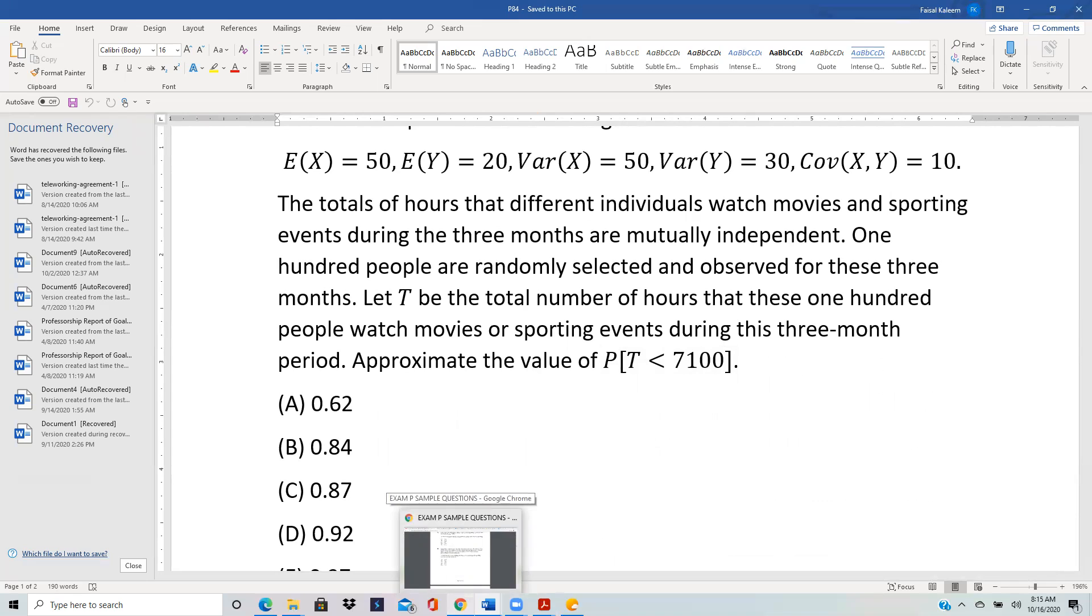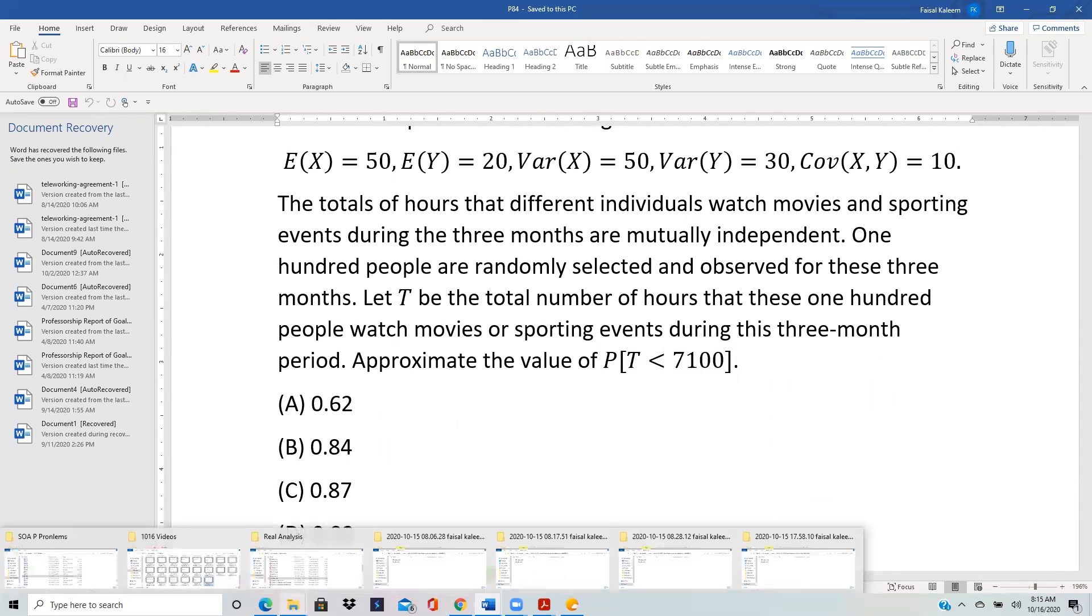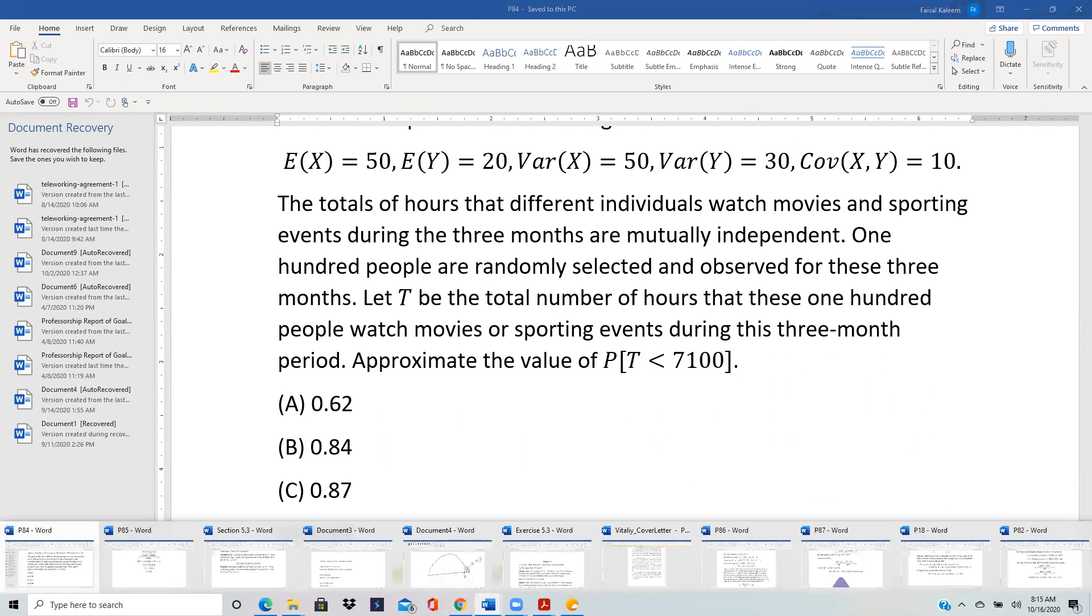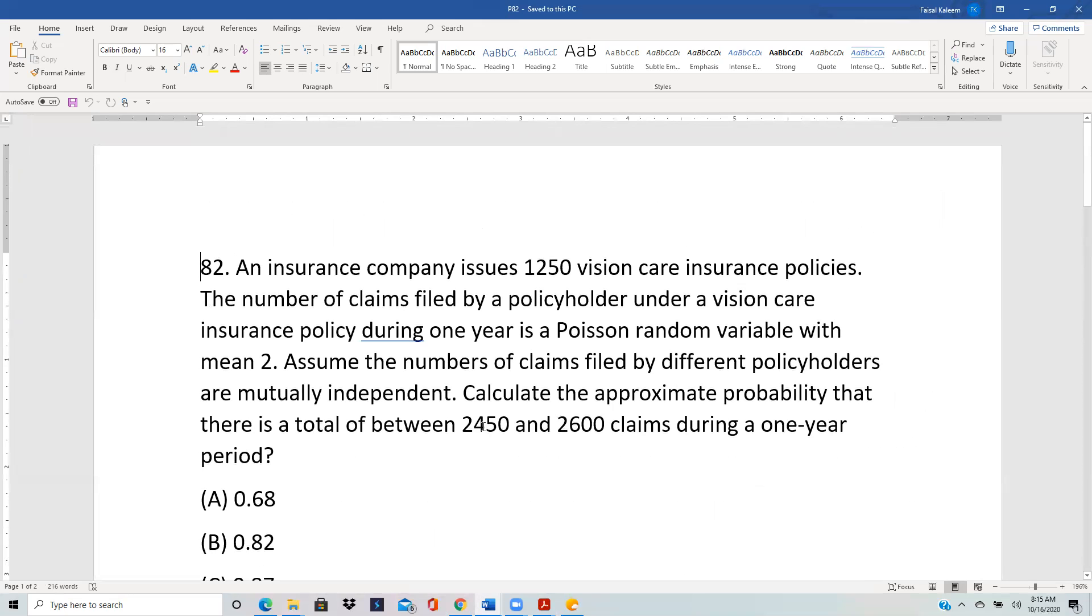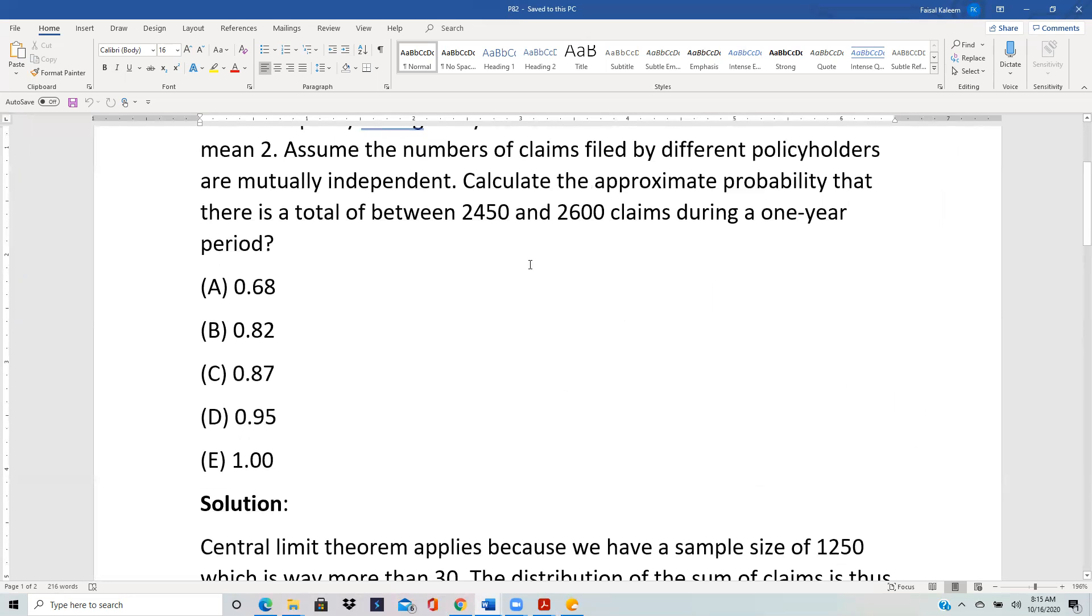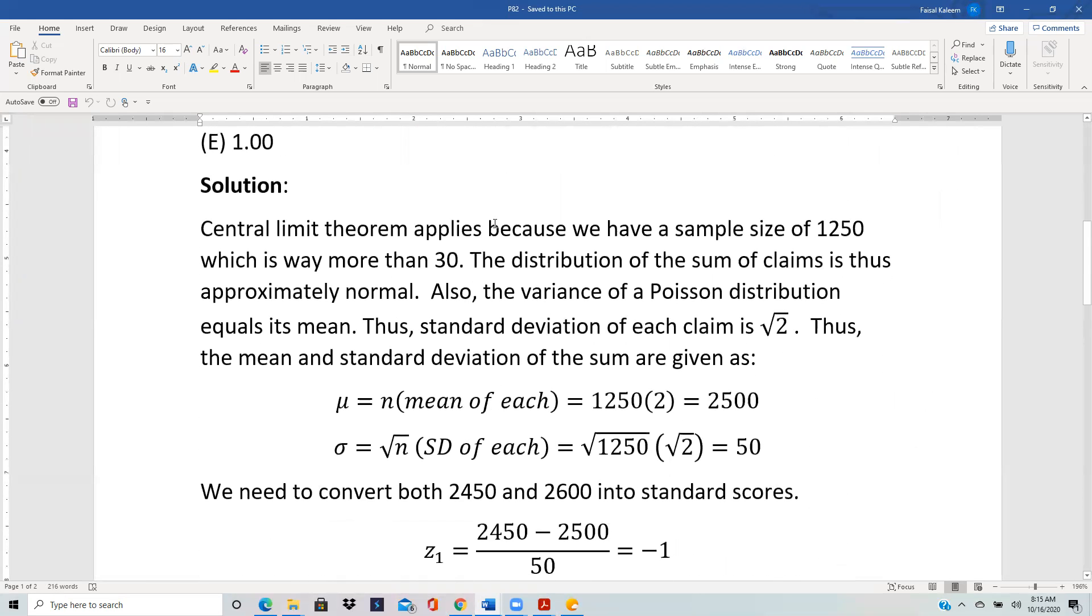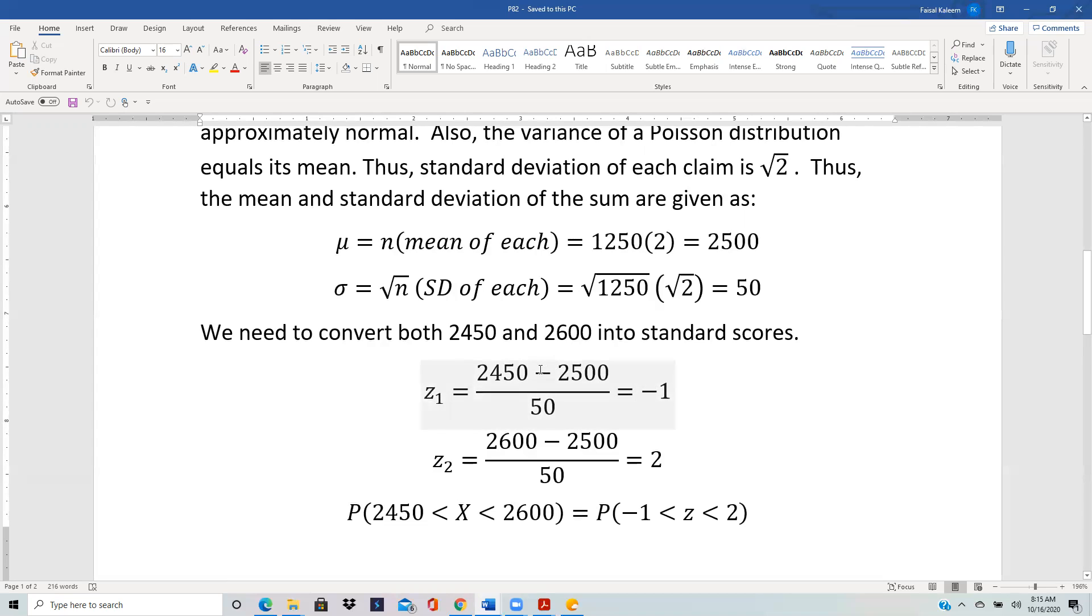In general, if the original variable is continuous, there is no continuity correction, and we just use whatever we have. The illustration I could have used was problem 82. In problem 82, it was between 2,450 and 2,600 claims. Number of claims is a discrete variable, so we could have thought about continuity correction, but it would have made very little difference because of the numbers involved.